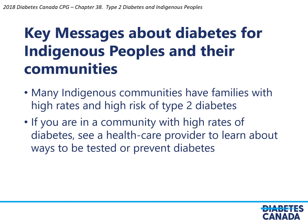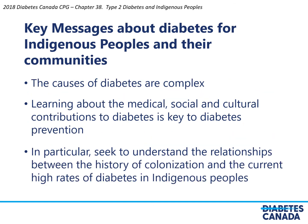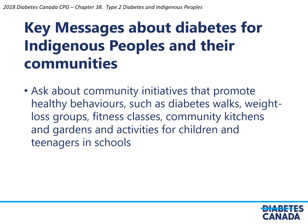Key messages about diabetes for Indigenous peoples in their communities: many Indigenous communities have families with high rates and high risk of type 2 diabetes. If you are in a community with high rates of diabetes, see a health care provider to learn about ways to be tested or prevent diabetes. The causes of diabetes are complex. Learning about the medical, social, and cultural contributions to diabetes is key to diabetes prevention. In particular, seek to understand the relationships between the history of colonization and the current high rates of diabetes in Indigenous peoples. Ask about community initiatives that promote healthy behavior such as diabetes walks, weight loss groups, fitness classes, community kitchens and gardens, and activities for children and teenagers in schools.